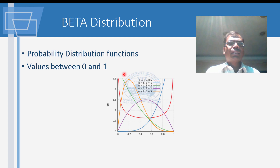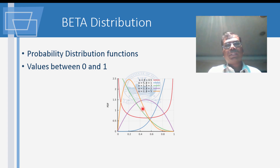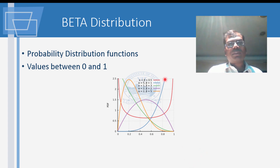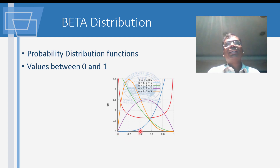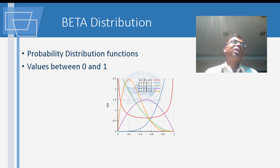If a bell curve skews heavily toward the optimistic time, pessimistic time carries very little weight and you might use different coefficients — for example, two times optimistic, three times most likely, one time pessimistic. On the other hand, if there's no chance of finishing on time, the curve shifts toward pessimistic. This is what the beta distribution question was about.